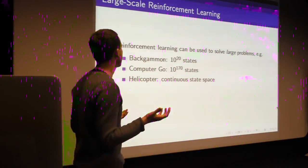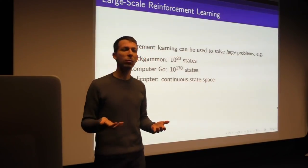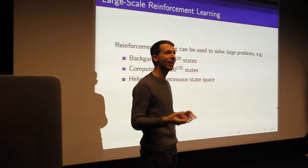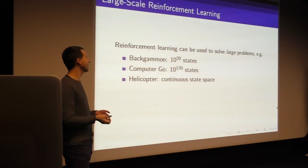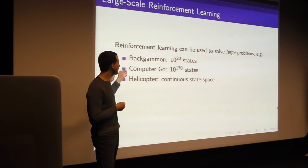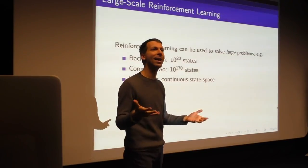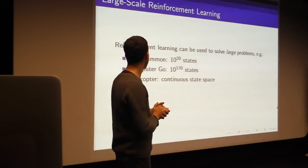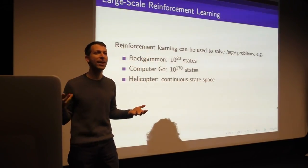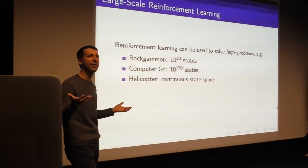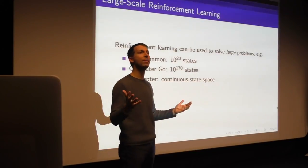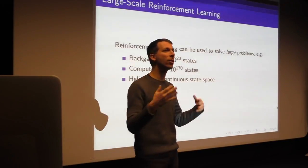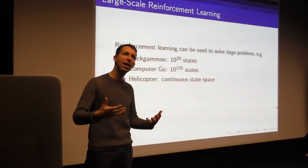Why are we interested in value function approximation? We'd like to use reinforcement learning to solve large, real-world problems. Backgammon has 10 to the 20 states — considered a small game. Go has 10 to the 170 states. Robots in continuous state spaces have an uncountably infinite number of states. So you can't just build a table anymore. The approach of having a separate value for each state simply doesn't scale.